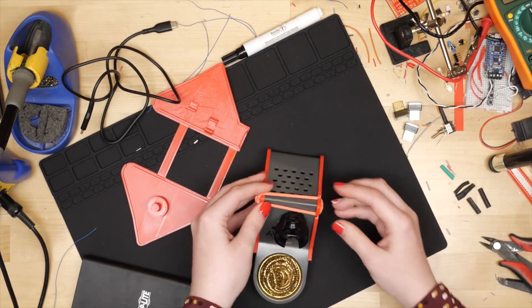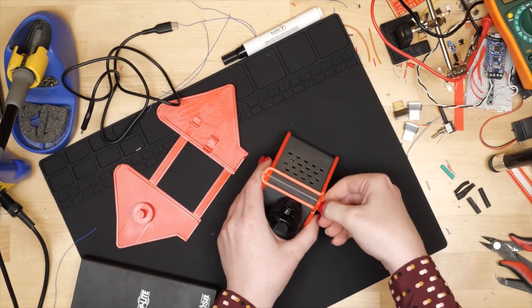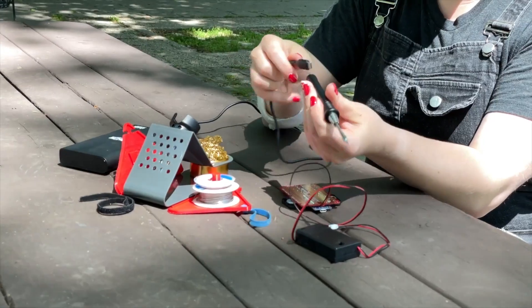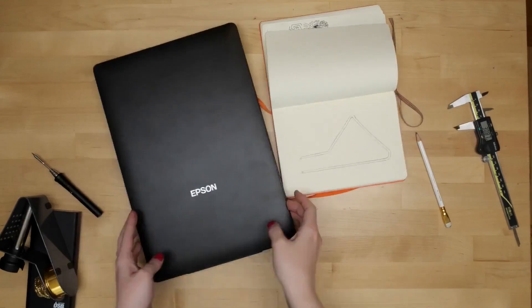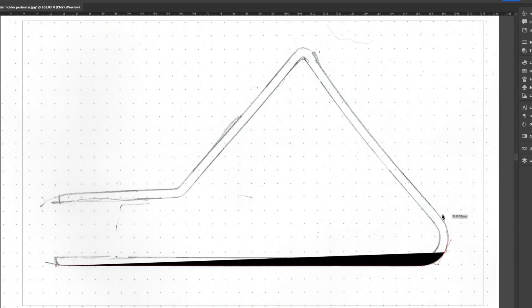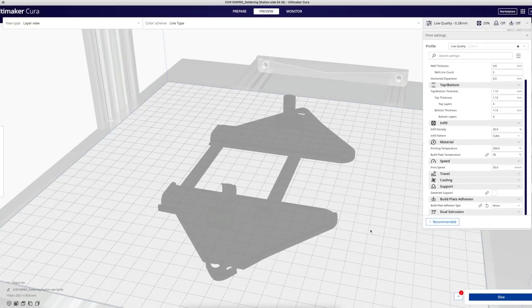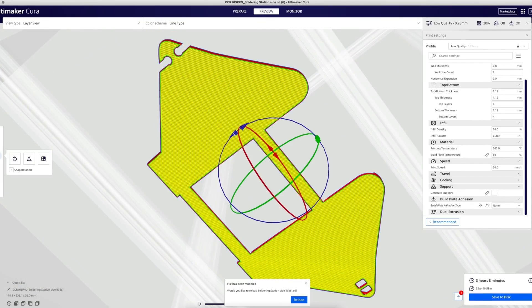When it's not in use, everything packs up inside the stand and holds together with a rubber band at the top. It looks like a great little rig and Becky does a great job showing how she traced the profile of the stand, cleaned it up in Illustrator, and brought it into Tinkercad to add all the holders and fold lines. If you're looking for a portable kit, this looks like a great way to go.